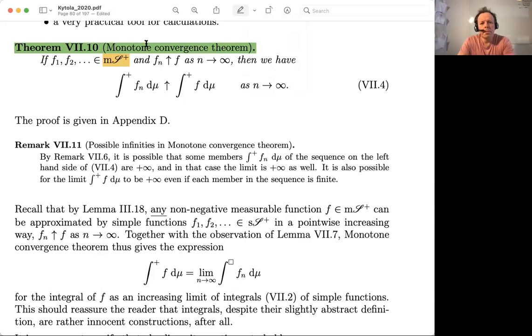We have seen that there's a monotone limit, that we have functions which increase to a limiting function. The monotone convergence theorem tells that if you have an increasing limit of functions, then the integrals increase also to where you like. So you can change the limit and the integral also in this setting.